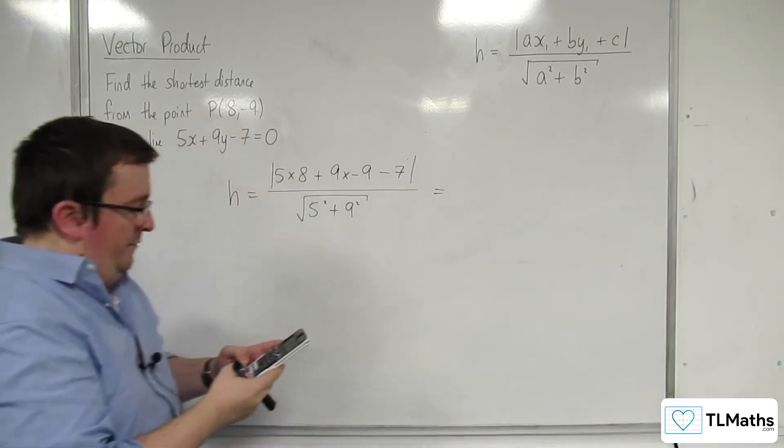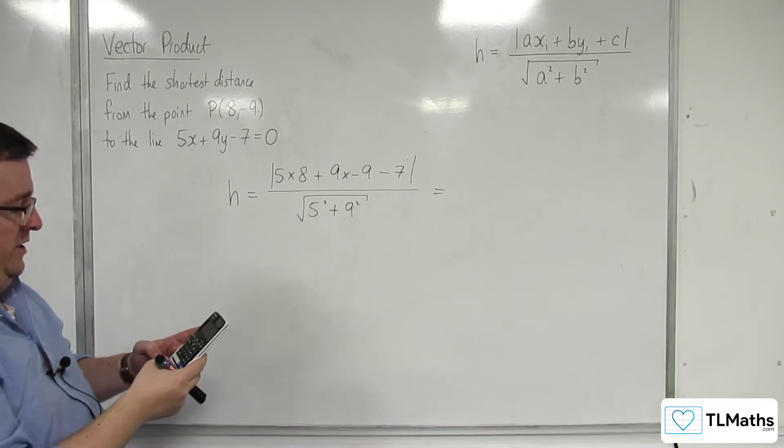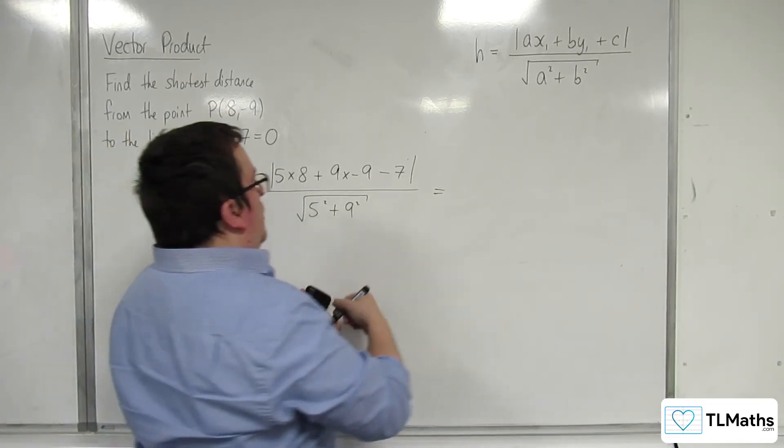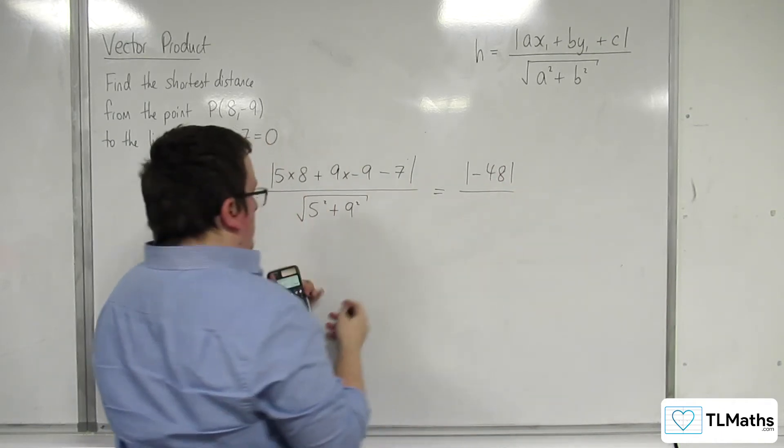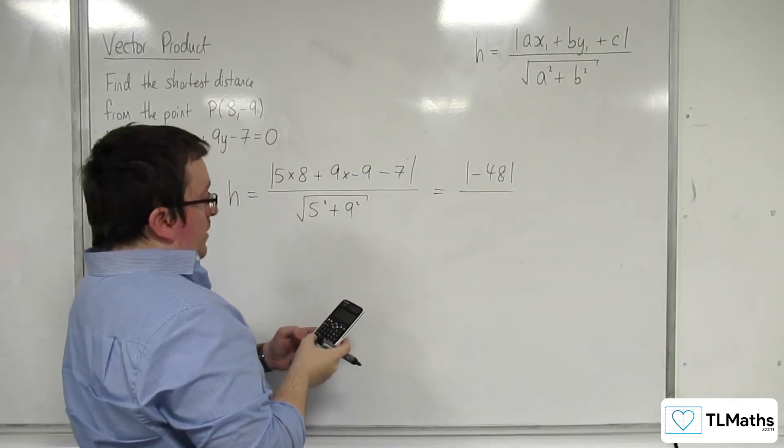So we have 5 times 8 plus 9 times -9, take away 7. So we've got the length of -48 in the numerator, and then we've got 25 plus 81, so root 106 in the denominator.